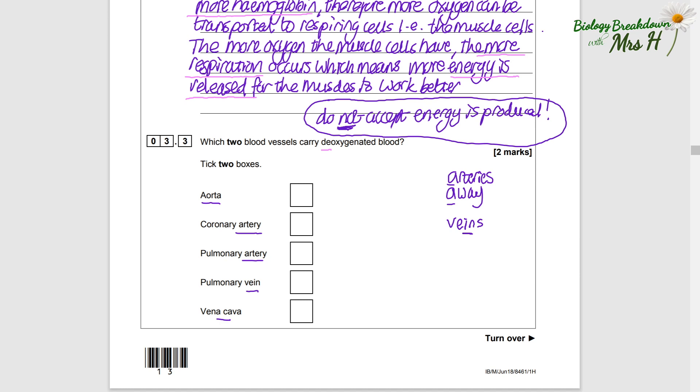That does help us when we're labeling the heart. The aorta carries oxygenated blood pumped from the left ventricle and it's an artery. The coronary artery branches off of the aorta and carries oxygenated blood to the heart muscle itself.